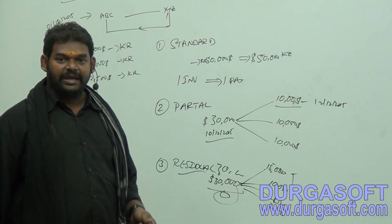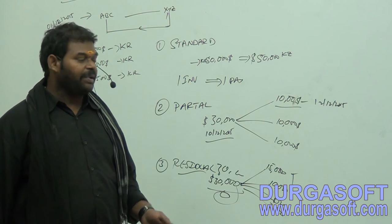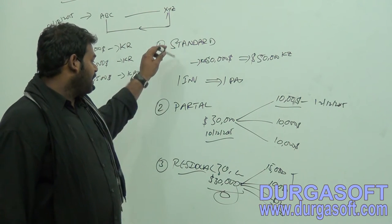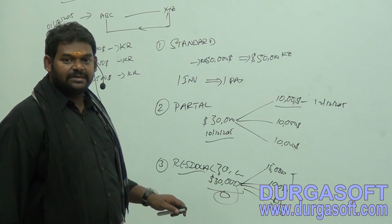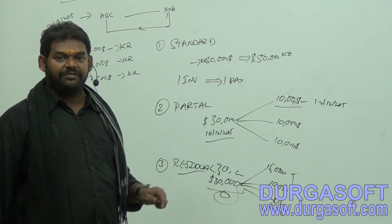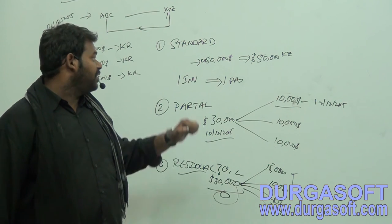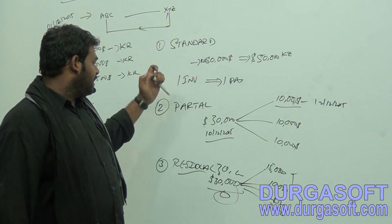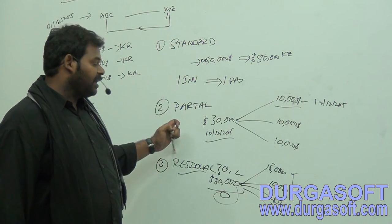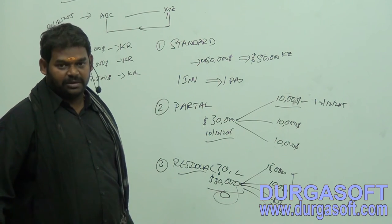So when making a payment to the vendor, we can use these three different payment methods: Standard, Partial, and Residual.